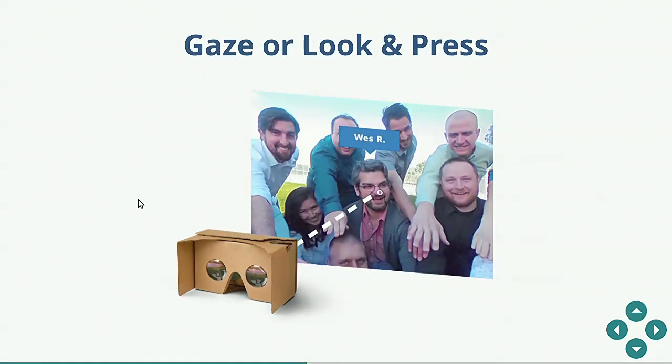So first there's kind of how do you interact with the world you're in? The lowest bar is the gaze or the look and press. So gaze is just, you'll generally have a reticle that's in the center of your vision. And if you stare at something for a little while, then they'll assume that you wanted to interact with that. So you'll enter it or, you know, something will happen. In this case, this was a team photo we took. It was 360. And if you looked at people, you would get their name, you know, pop up above their head.